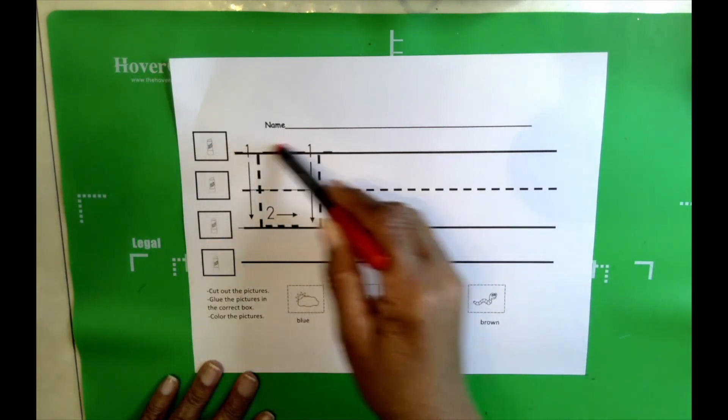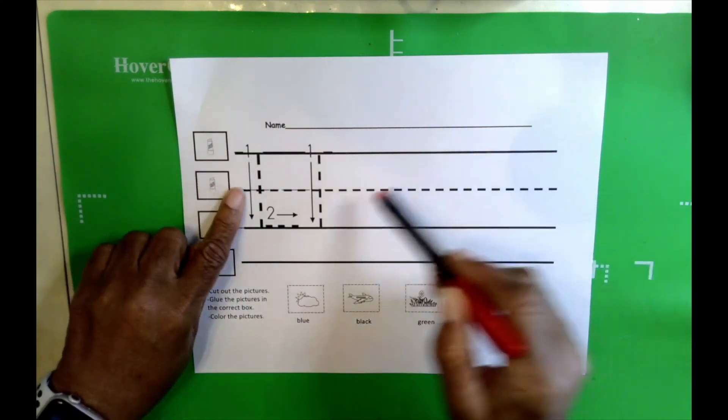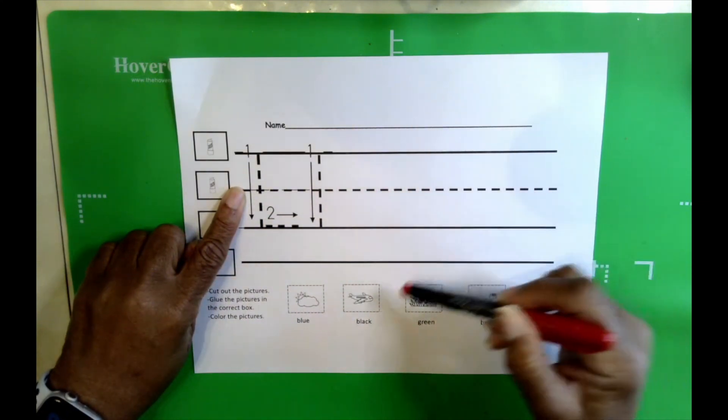We know that the first line is called the skyline. The second line with the dashes is called the plane line.